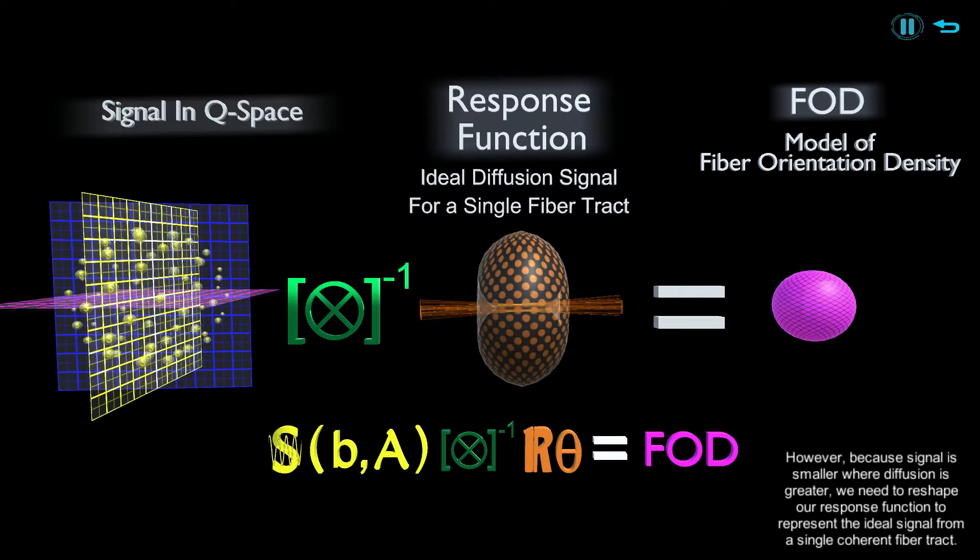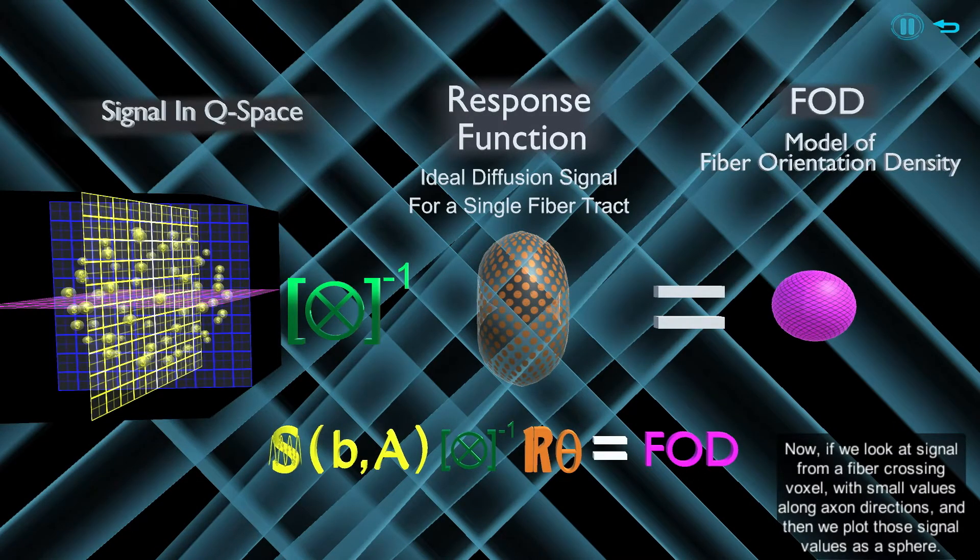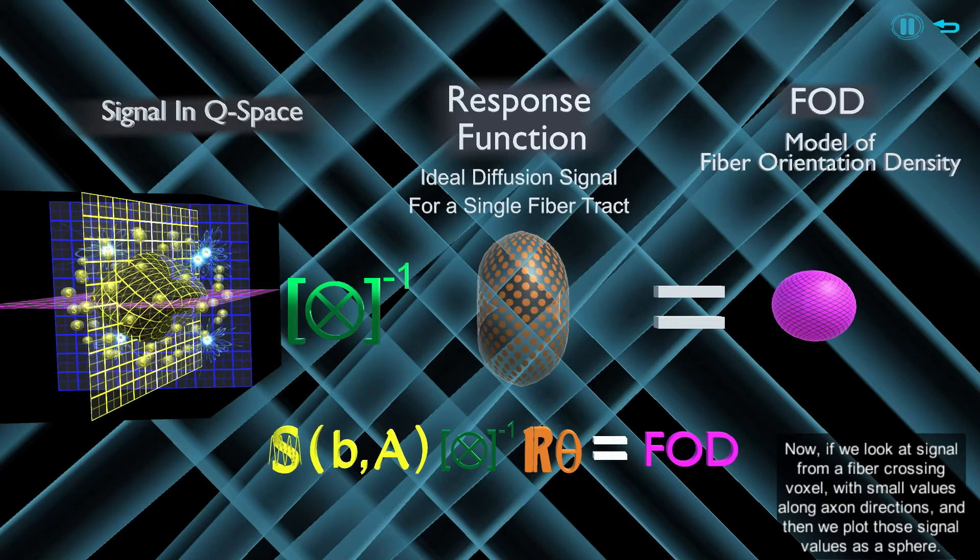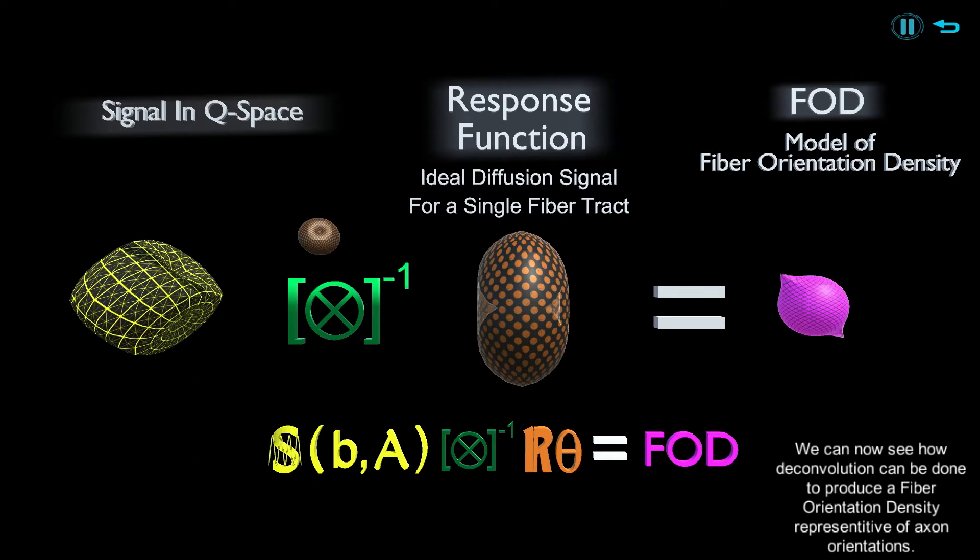Now, if we look at signal from a fiber crossing voxel, with small values along axon directions, and then we plot those signal values as a sphere, we can see how deconvolution can be done to produce a fiber orientation density representative of axon orientations.